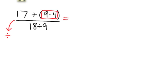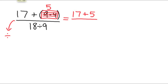9 minus 4 is equal to 5. Now we're finished with the 9 minus 4, but we need to copy down the rest of that expression. In the numerator, we have 17 plus 5. Then we have the fraction bar. In the denominator, we still have 18 divided by 9.